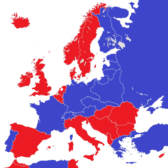Britain followed a different model in the Middle East, installing local monarchies in several colonies and mandates including Iraq, Jordan, Kuwait, Bahrain, Oman, Yemen, and Libya. In subsequent decades, revolutions and coups overthrew a number of monarchs and installed republics. The Middle East is the only part of the world where several large states are still ruled by monarchs with almost complete political control.